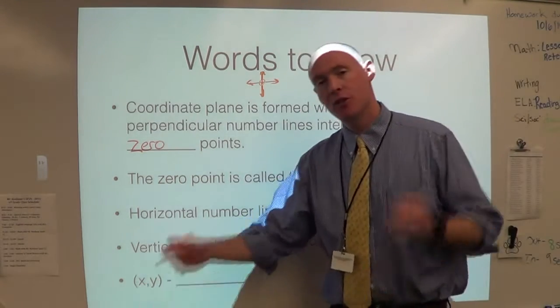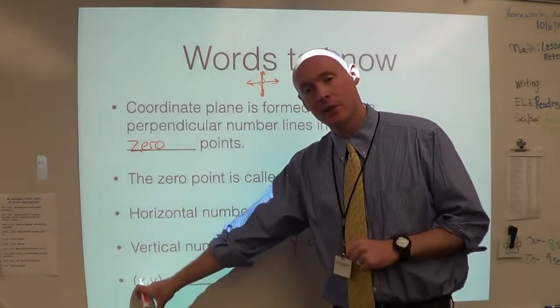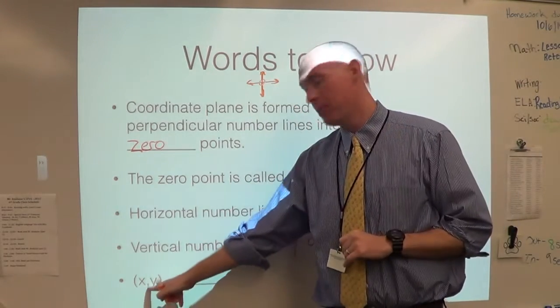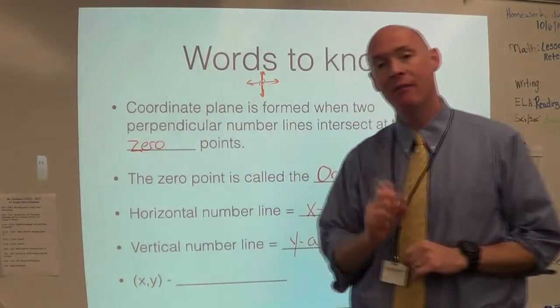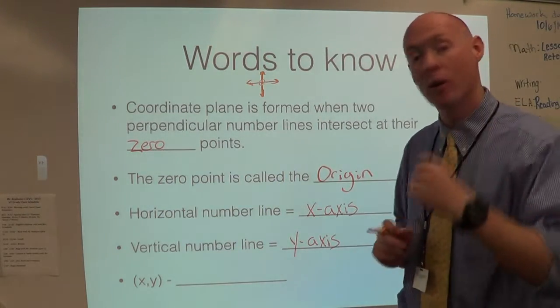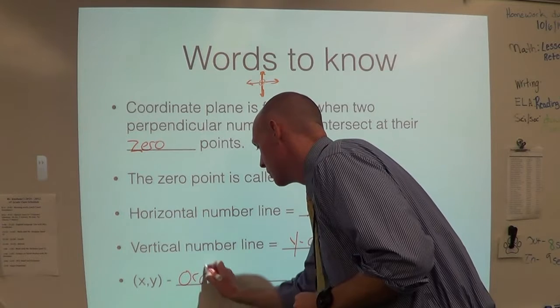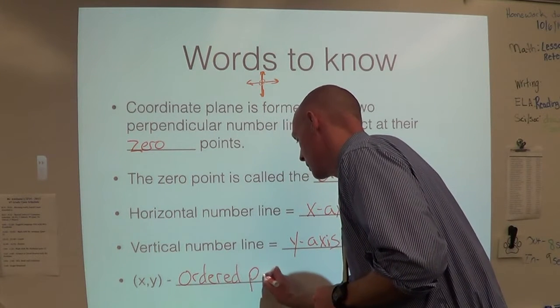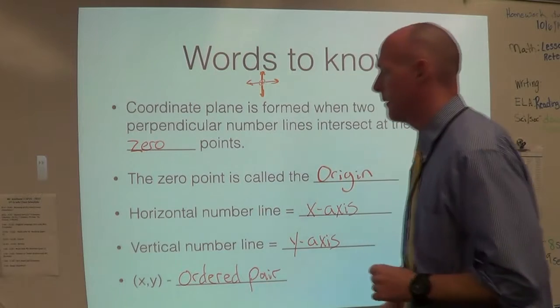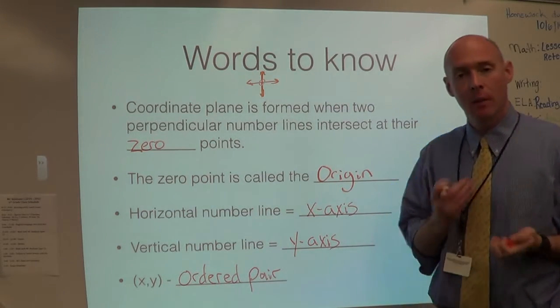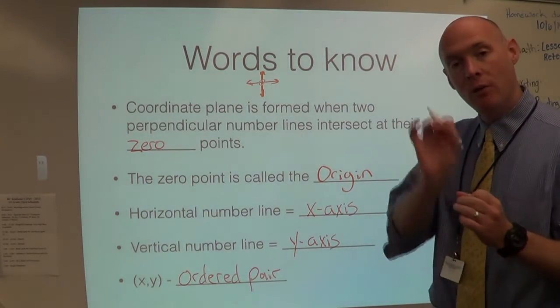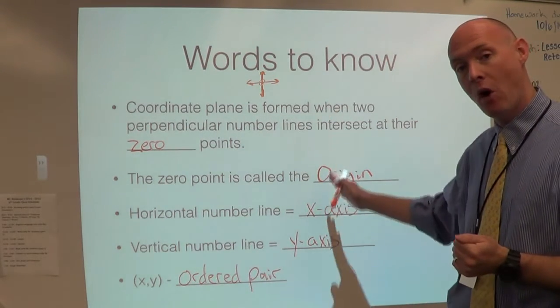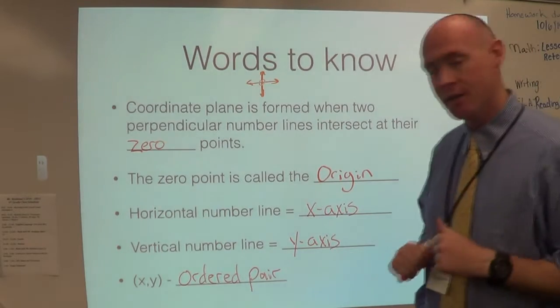And then when you put the two numbers together, you put x first, then y, both in parentheses, separated by a comma. When you have that, you have an ordered pair. This should be a little bit of a review. You've probably graphed or plotted points before. We're just going to take it to the next level here. Make sure you have all of these notes down and let's continue.